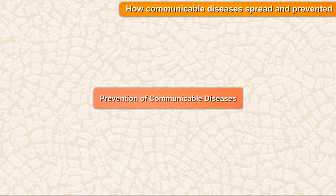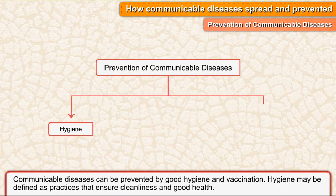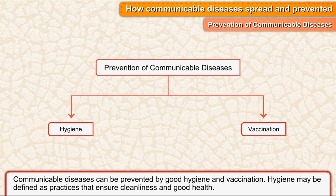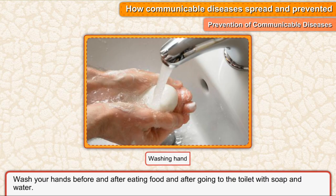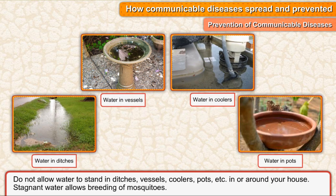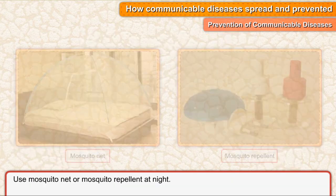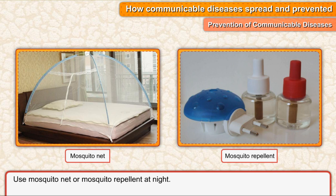Prevention of communicable diseases: Communicable diseases can be prevented by good hygiene and vaccination. Hygiene may be defined as practices that ensure cleanliness and good health. Wash your hands before and after eating food and after going to the toilet with soap and water. Do not allow water to stand in ditches, vessels, coolers, pots, etc., in or around your house. Stagnant water allows breeding of mosquitoes. Use mosquito net or mosquito repellent at night.